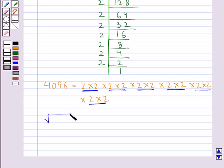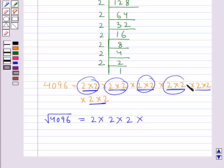Now square root of 4096 is given by taking out 1 factor out of each pair. So from the 1st pair we have a 2. From the 2nd pair another 2. From the 3rd pair a 2 again. From the 4th pair a 2. From the 5th pair also a 2. And from the last pair also we have a 2.